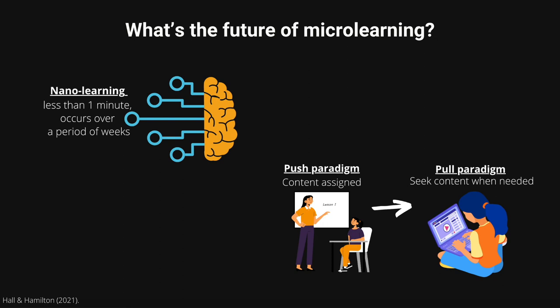They also talk about nano learning — a microlearning unit that is less than one minute, 60 seconds or less, but delivered and occurring over a period of weeks. This aligns with spaced repetition theory, which basically says that if content and skills are visited over time, spaced out, they can be committed to long-term memory much more easily.